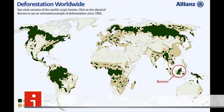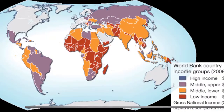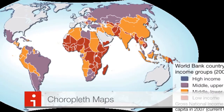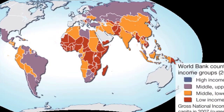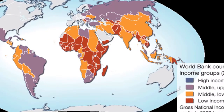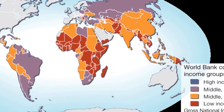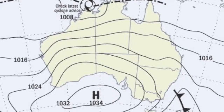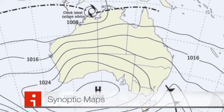Thematic maps are maps that show a specific theme, like deforestation in a specific area. Choropleth maps use different colour shades to show the amount or value of something, like how many people earn a certain amount of money living in a given area. And synoptic maps are just weather maps.